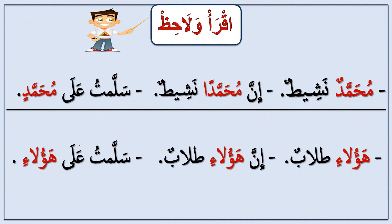Some words in Arabic language are just like that. Look: Muhammadun, nashitun — Inna Muhammadan nashitun. You see the word in red color — the haraka changed: Muhammadun, Muhammadan, and Muhammadin. So this word's ending haraka can change, just like the chair you can move it. We call this word mu'rab, because you can change the haraka.